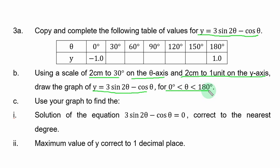draw the graph of the given relation for 0 degrees less than theta less than 180 degrees. Part C of the question: Use your graph to find the solution of the equation 3 sin 2 theta minus cos theta equal to 0, correct to the nearest degree, and maximum value of y correct to one decimal place.